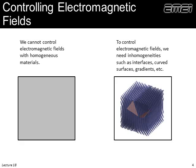Looking at a smooth, homogeneous block on the left — nothing interesting there. I would argue we can't control electromagnetic fields with homogeneous materials. We have to have some kind of interface, two different types of materials, a curved surface, a gradient, some kind of inhomogeneity in order to control the field.